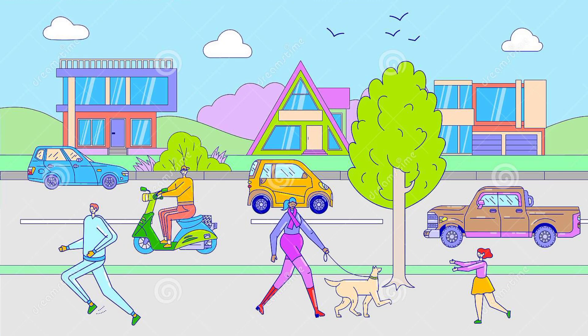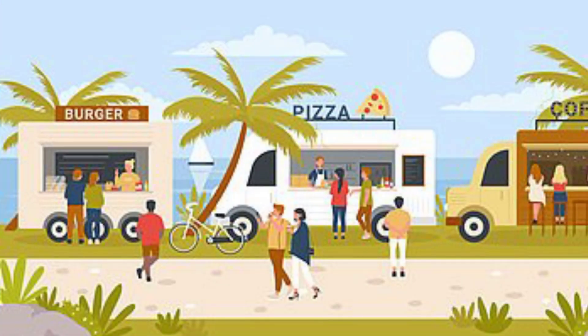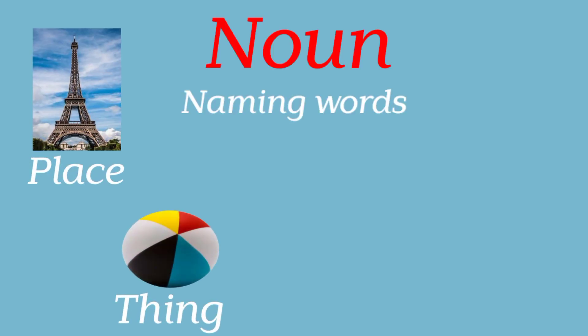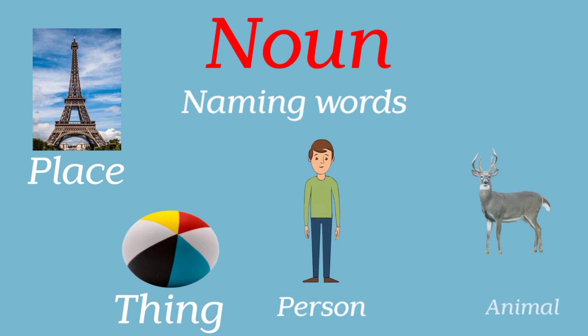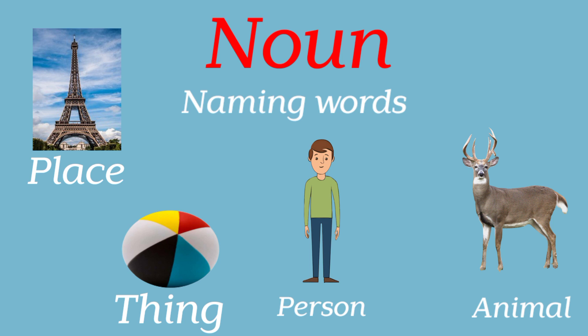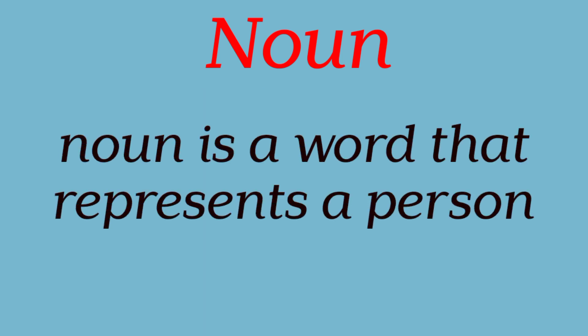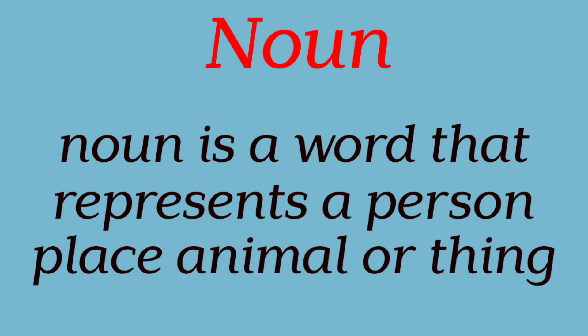Noun. Everything that we see around us has a name: place, thing, person, animal. All the naming words are called nouns. A noun is a word that represents a person, place, animal, or thing.